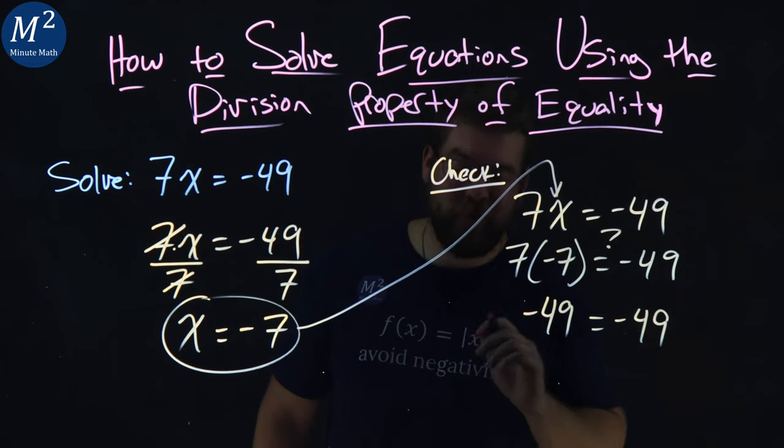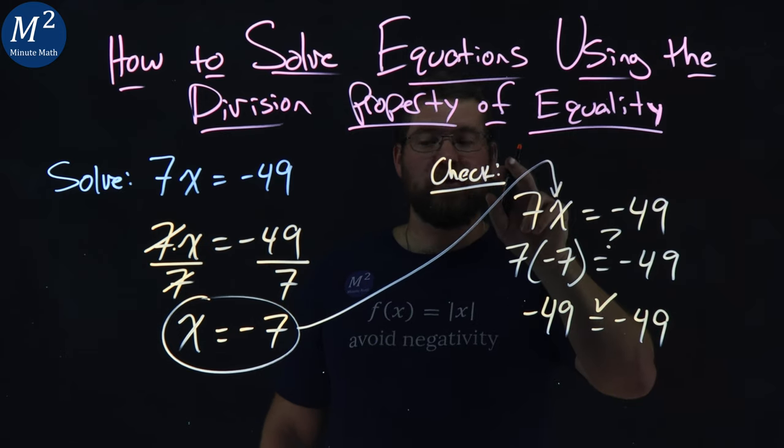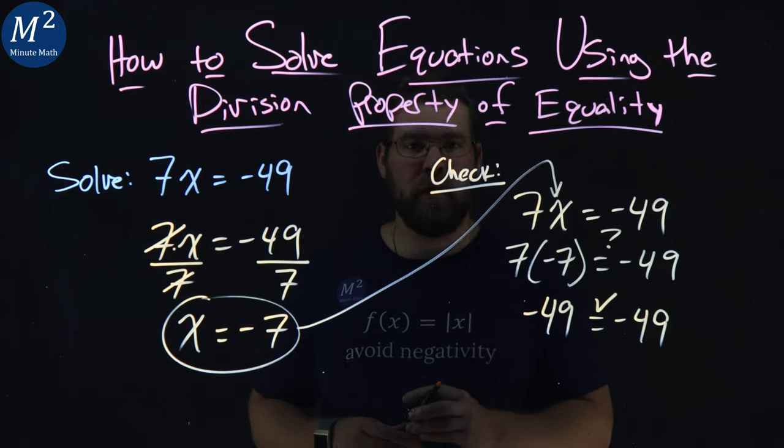Is that equal to a positive 49? Or not positive, negative 49? Yes, it is. The left and right-hand side are equal. Our check showed that x equals negative 7 is a solution to our equation.